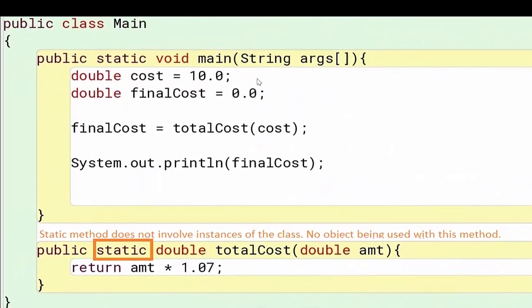The next word you're going to see is the word static. A static method does not involve instances of the class. Now if you're new to Java, you may be saying, I don't know what that means. All that means is there's no object being used with this method. When you create an object and you're having an object call a method, it cannot be a static method. So that's all that static means. When you're not working with objects, you're going to use a static method.